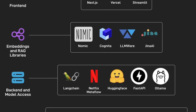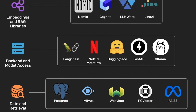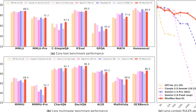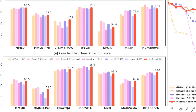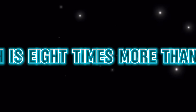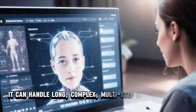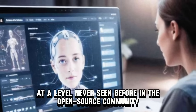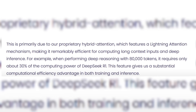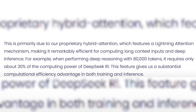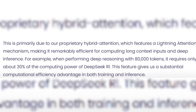What's truly astonishing is that Minimax M1 doesn't just perform well — it redefines the boundaries of open-source AI. It supports a 1 million token context window, matching Google's Gemini 2.5 Pro, and delivers 80,000 token reasoning outputs, which is eight times more than DeepSeek R1. It can handle long, complex, multi-step reasoning tasks at a level never seen before in the open-source community. This is thanks to its proprietary hybrid attention architecture, which uses a mechanism called Lightning Attention, enabling highly efficient processing of long inputs and deep reasoning.